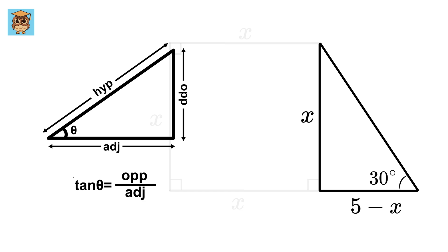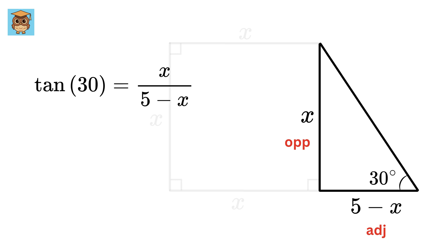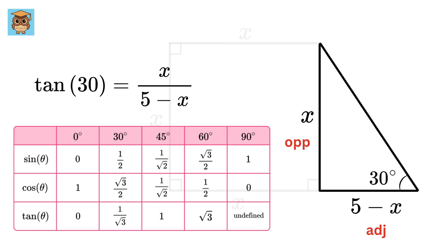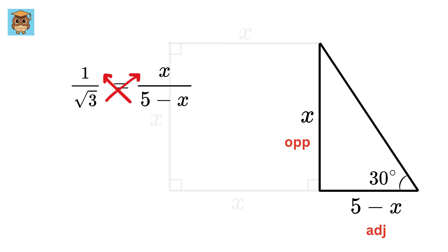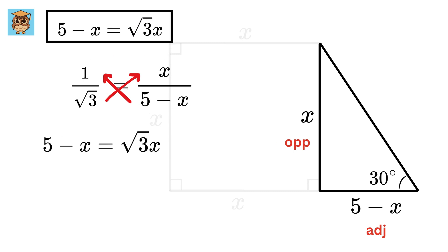So we can use trigonometry to find the value of x. We have tan of theta as opposite upon adjacent. So tan of 30 will be x upon 5 minus x. Using the trigonometry table, we can find the value of tan 30, which turns out to be 1 by root 3. Now cross-multiply: 5 minus x will be equal to root 3 times x. Let us box this and keep it aside for a moment, as you will soon see why.